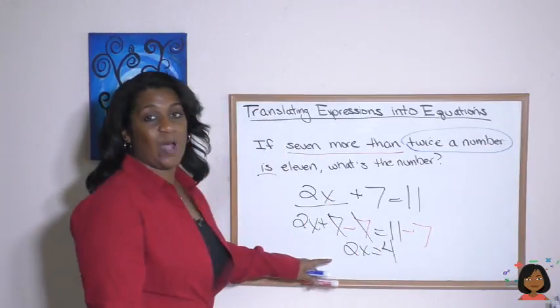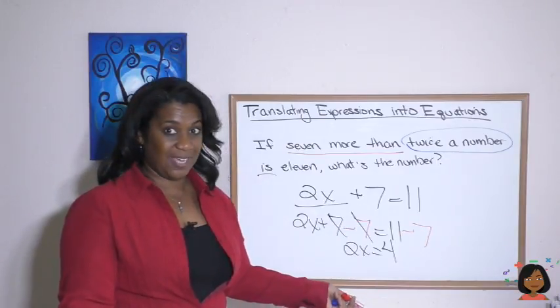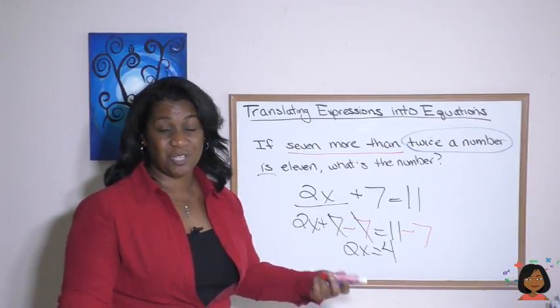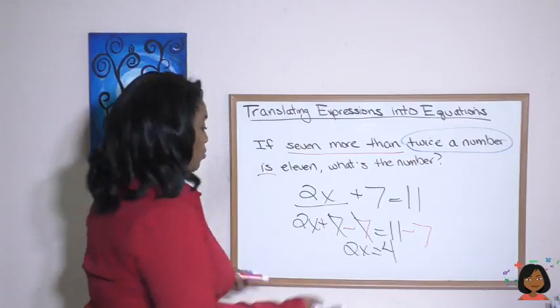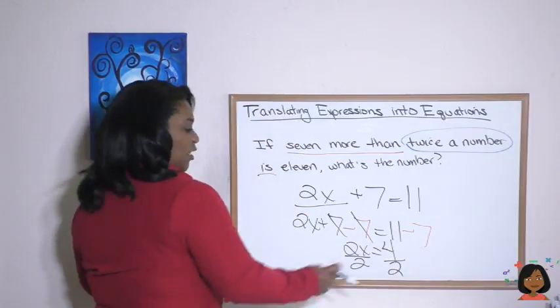We're halfway home. Now we have two X equals four. That's just a missing number in multiplication. So to get rid of that two, we have to divide by two. So let's divide by two here.